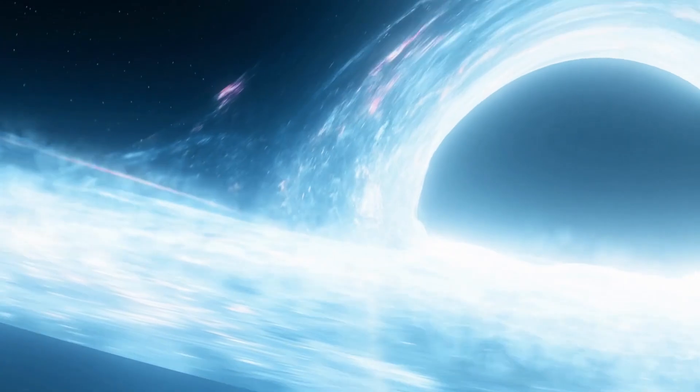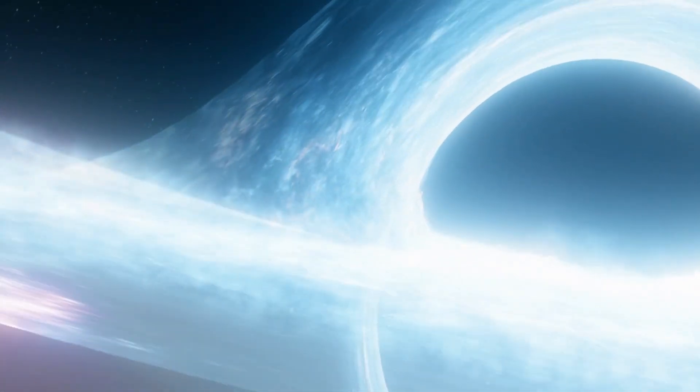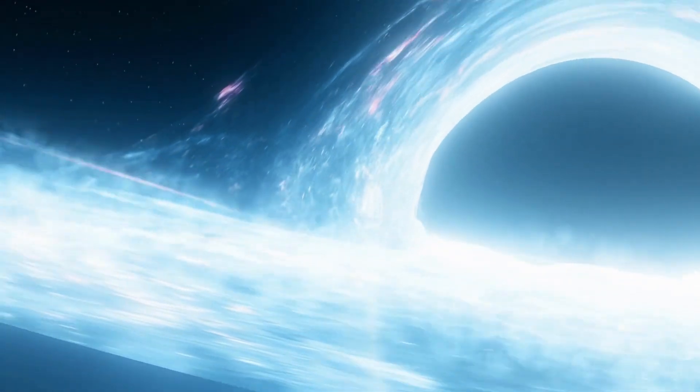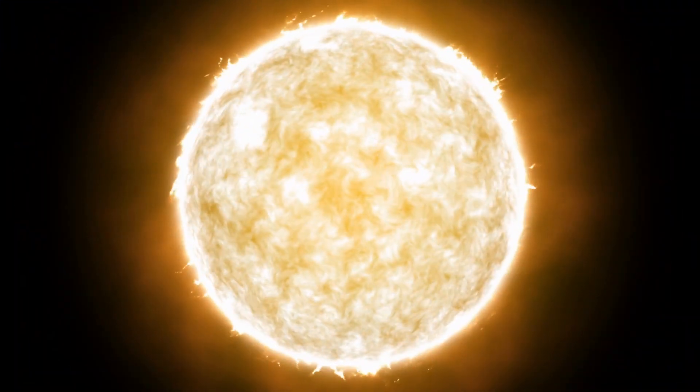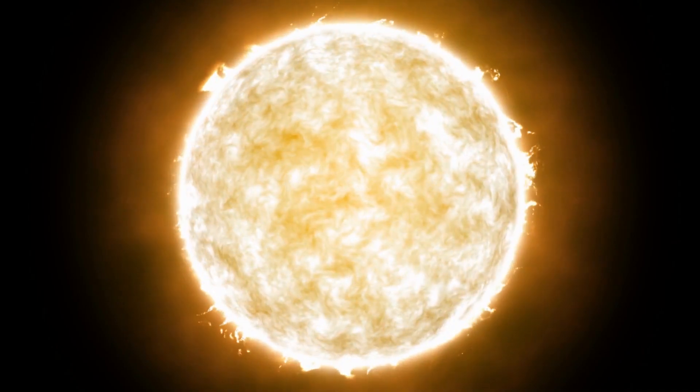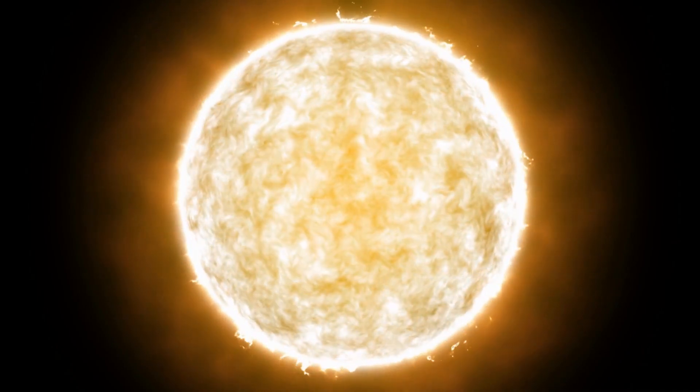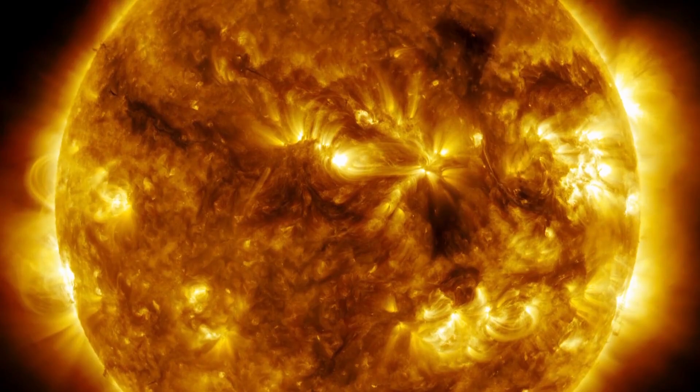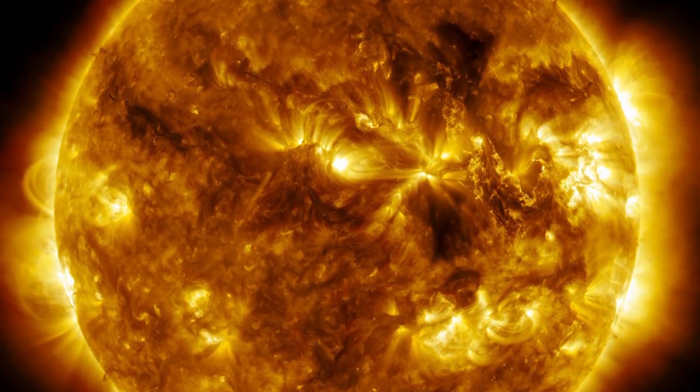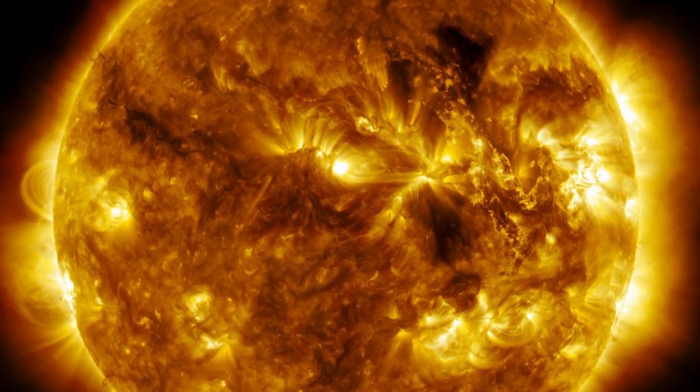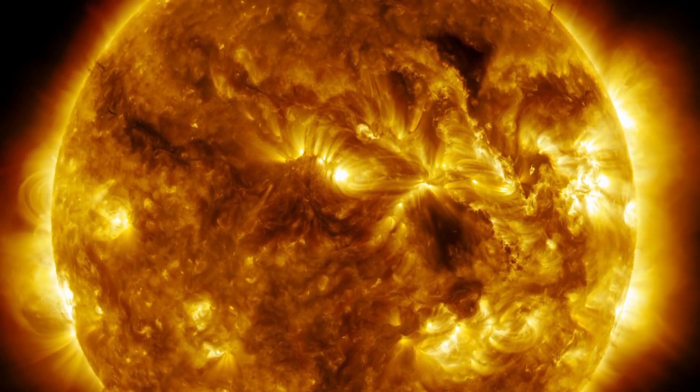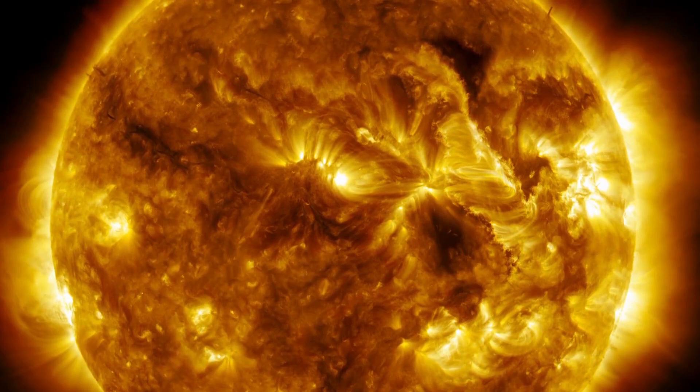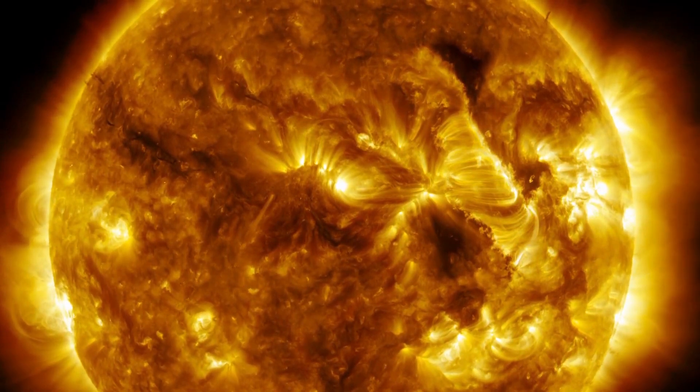To understand how black holes formed and what happens inside them, it is necessary to go back to the life cycle of a massive star. These massive stars are true cosmic powerhouses fueled by the incredible nuclear fusion reactions that take place in their cores. The sun's energy source comes from the fusion of hydrogen into helium. During this process, two hydrogen atoms combine in a collision and form a helium atom. As long as the star has enough hydrogen to carry out the fusion, it can maintain its brightness.